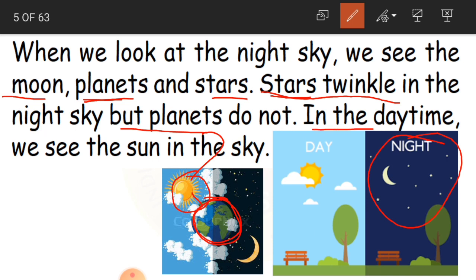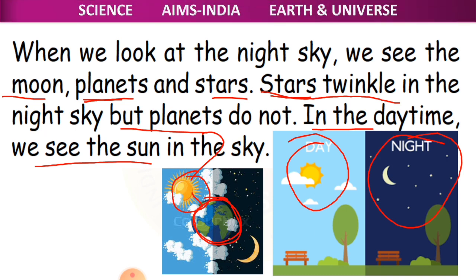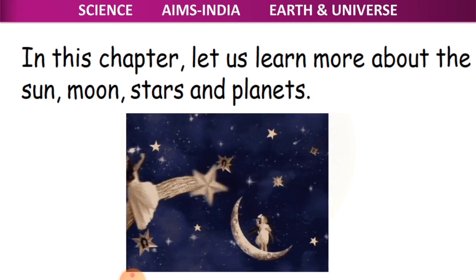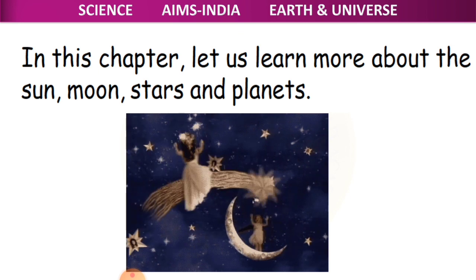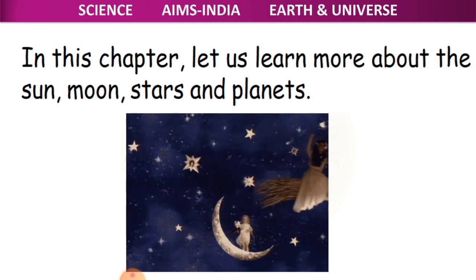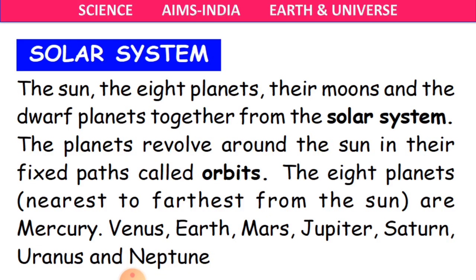In the daytime, we can see the sun in the sky with different shades — morning sun, afternoon sun, evening sun — sunrise, sunset, and midday sun. In this chapter, let us learn more about the sun, moon, stars, and planets. We are going to have a clear picture of the sun, moon, stars, and planets. Now, we will start with the solar system.